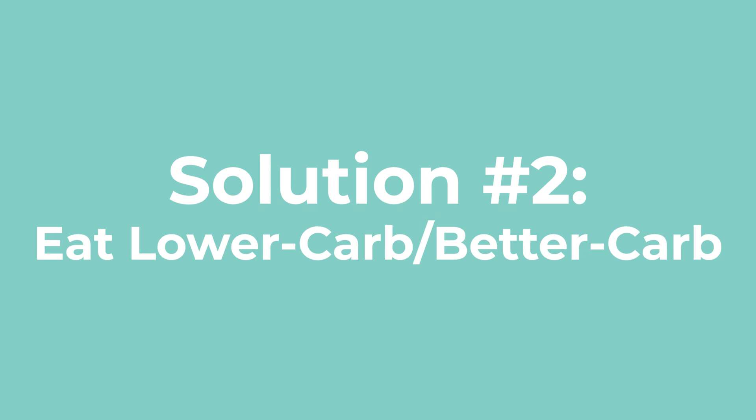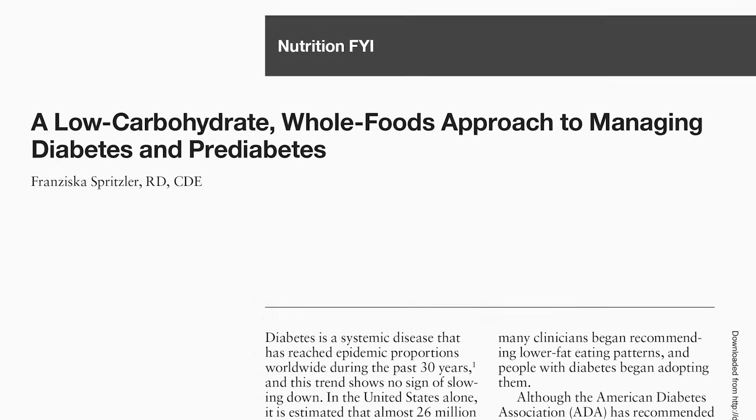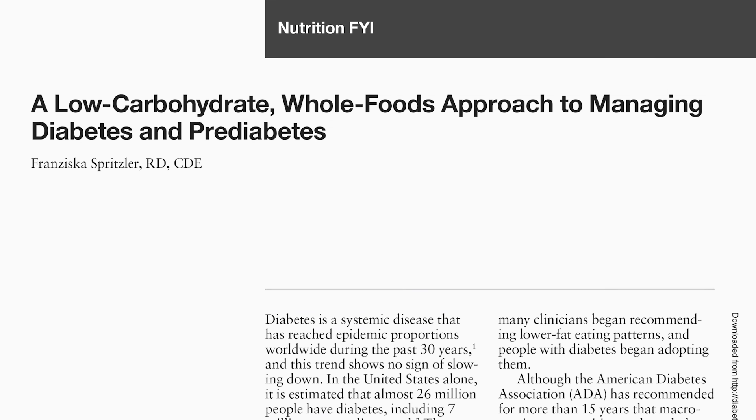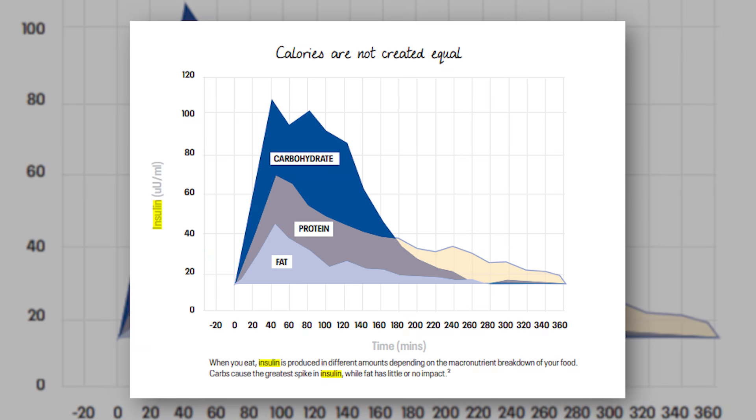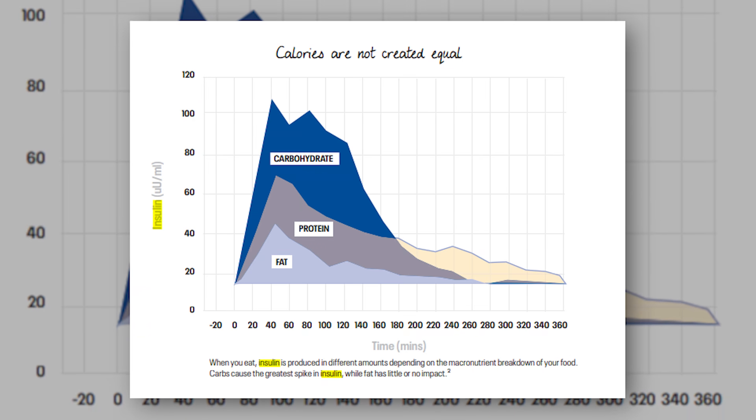Because the onset of metabolic disorders is closely related to how your cells respond to insulin, and insulin is secreted in response to rising blood sugar, the best approach to halt the progression is to eat in a way that stabilizes blood sugar. Many studies show that following a low-carb diet has this effect, making the diet a viable approach. This makes sense when you consider that carbohydrates are the macronutrients that cause the most significant spike in blood sugar and insulin.